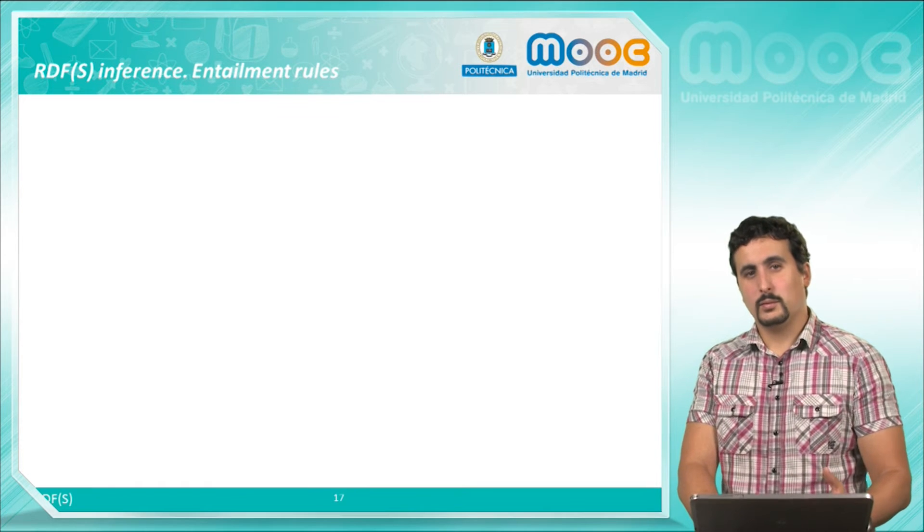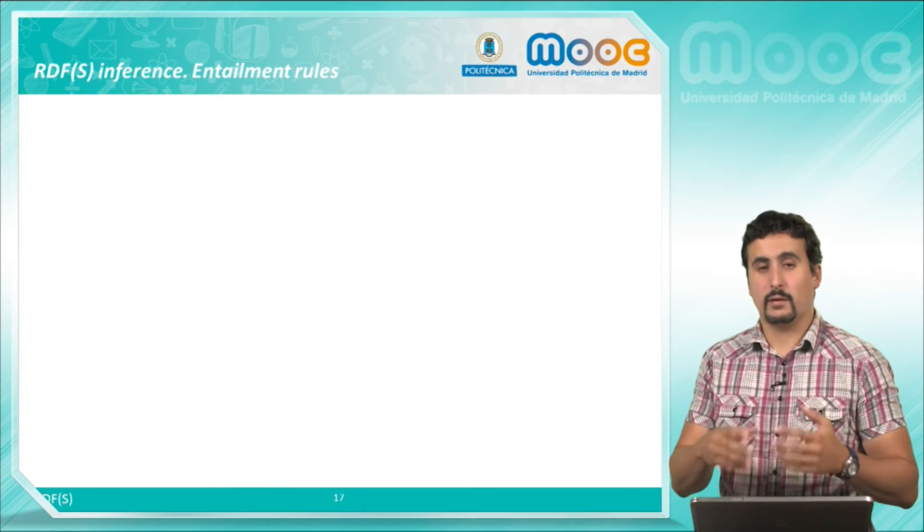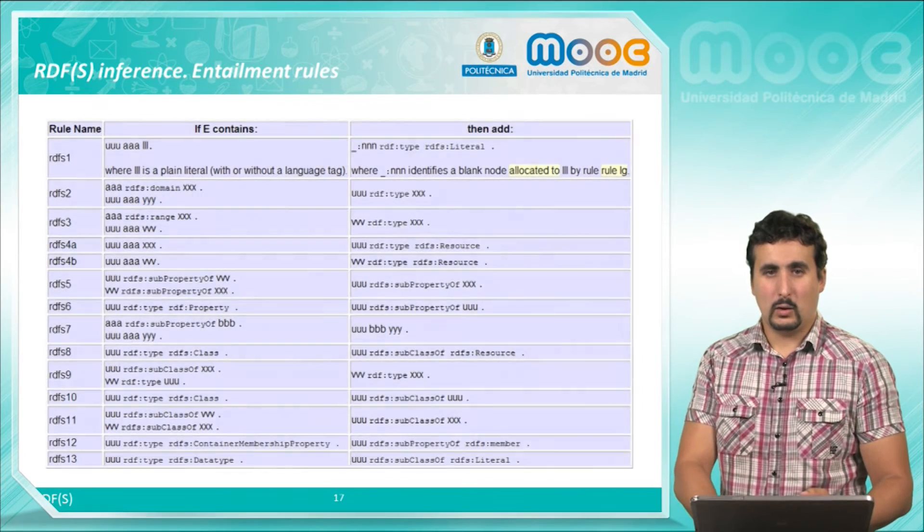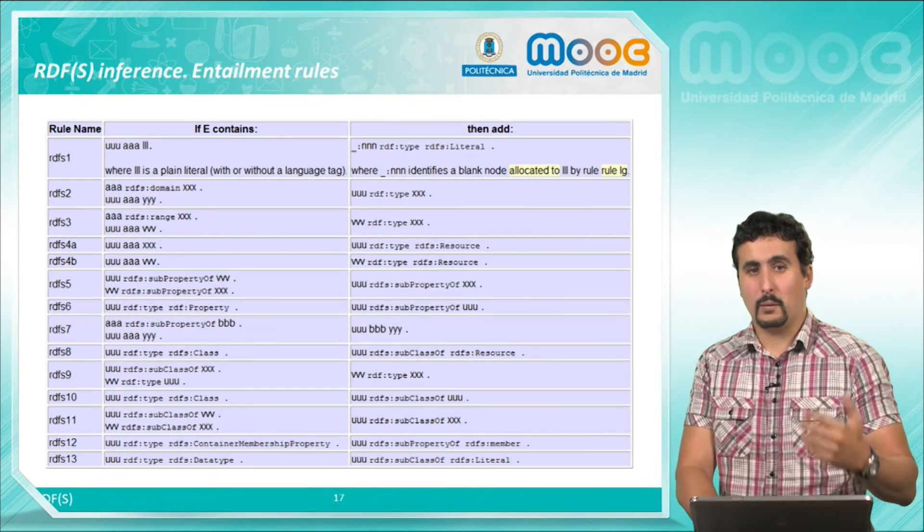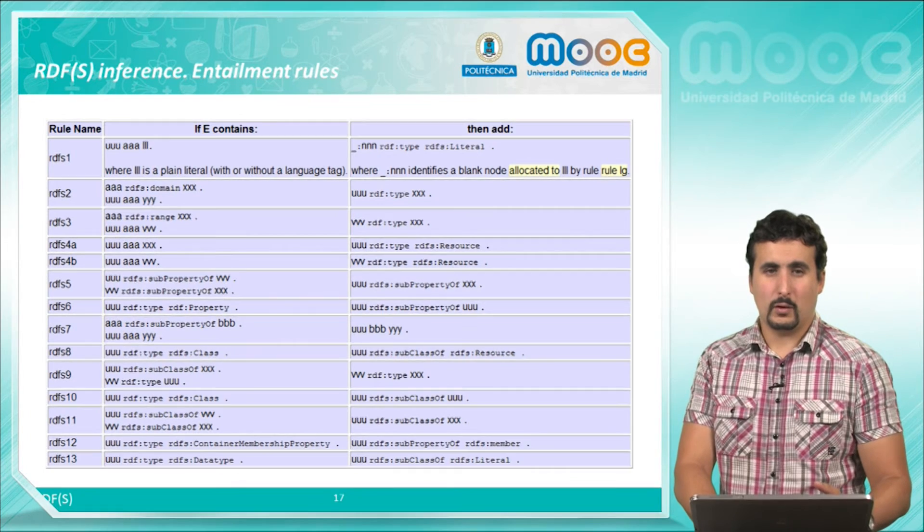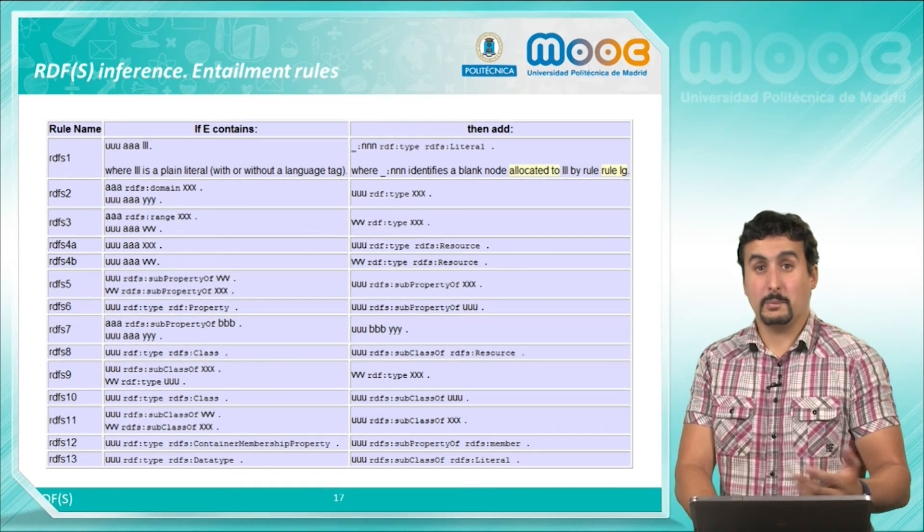RDFS introduces a more elaborated and complex set of inference rules, allowing us to infer more information from our triples. We have rules from inheritance or type inference for example.